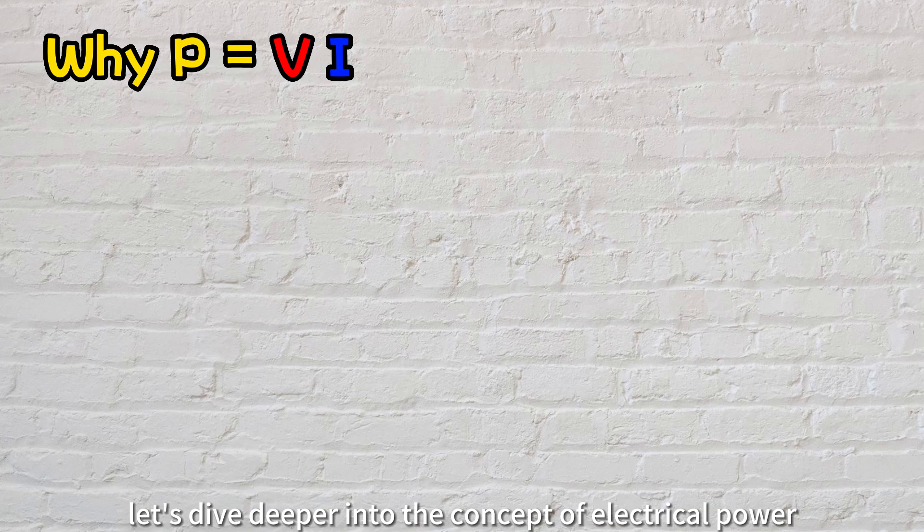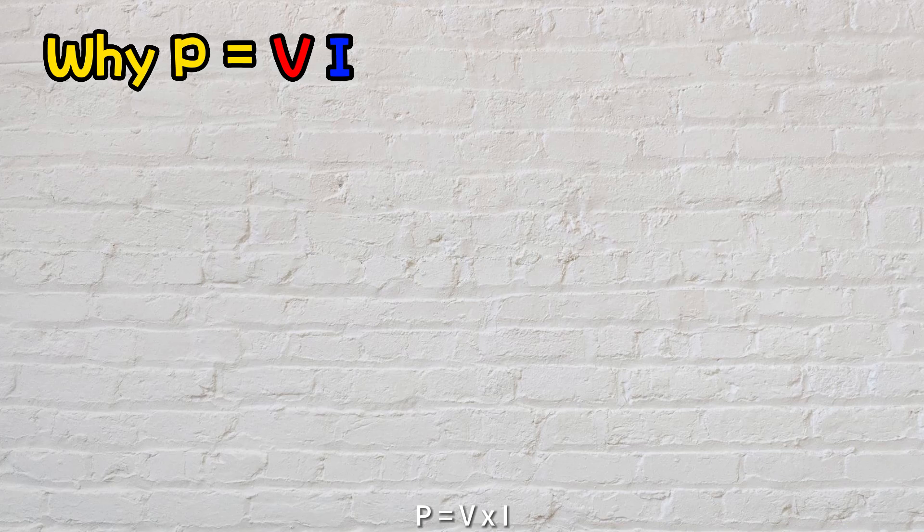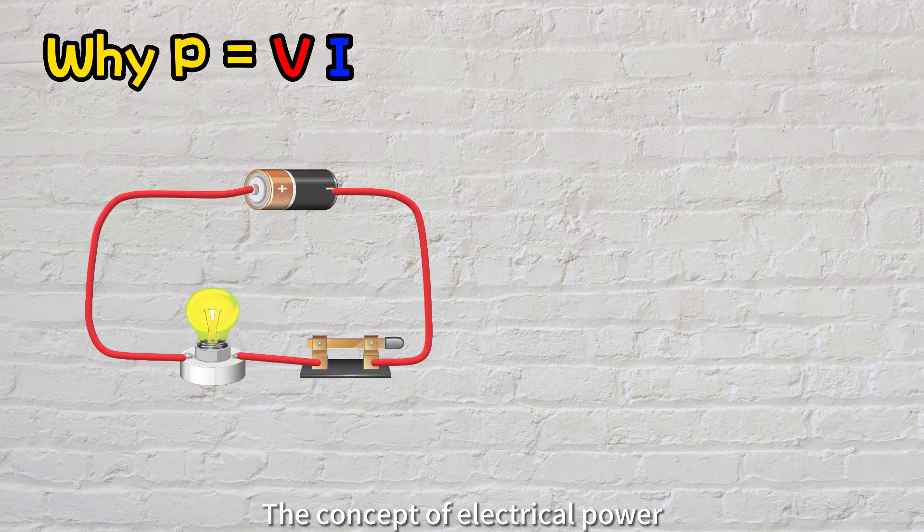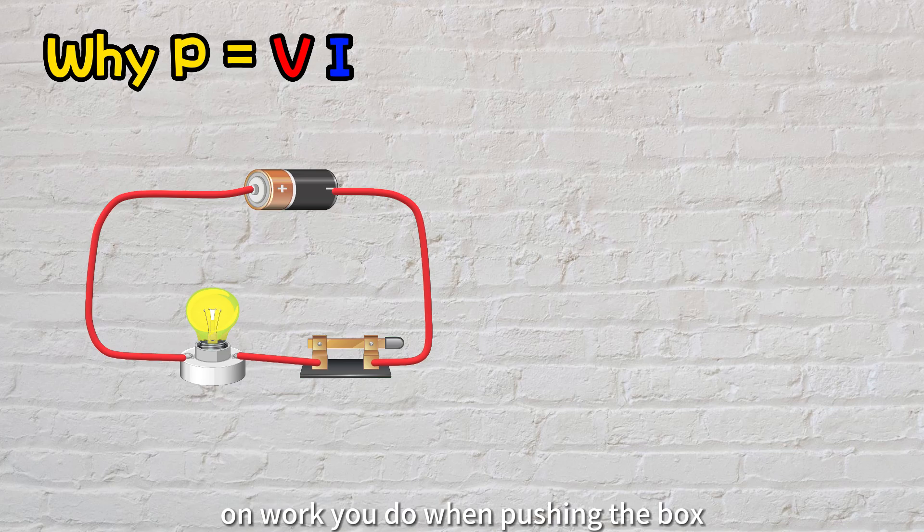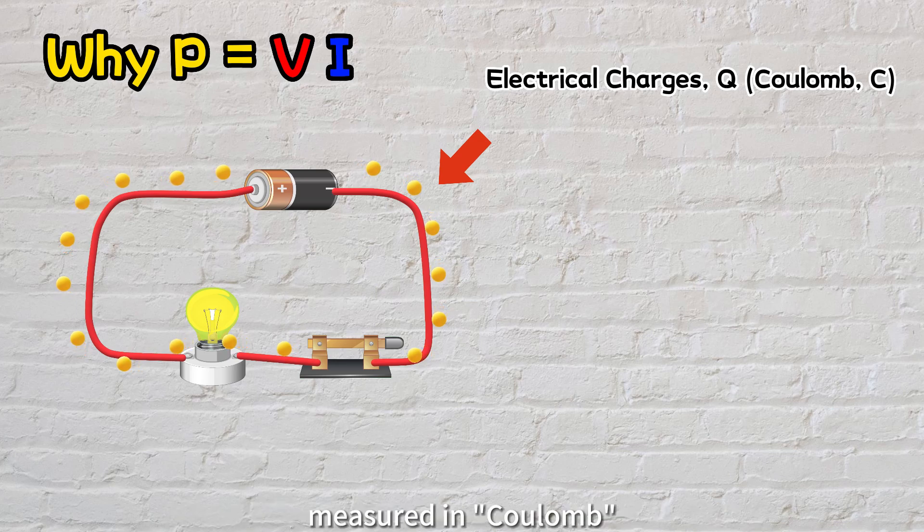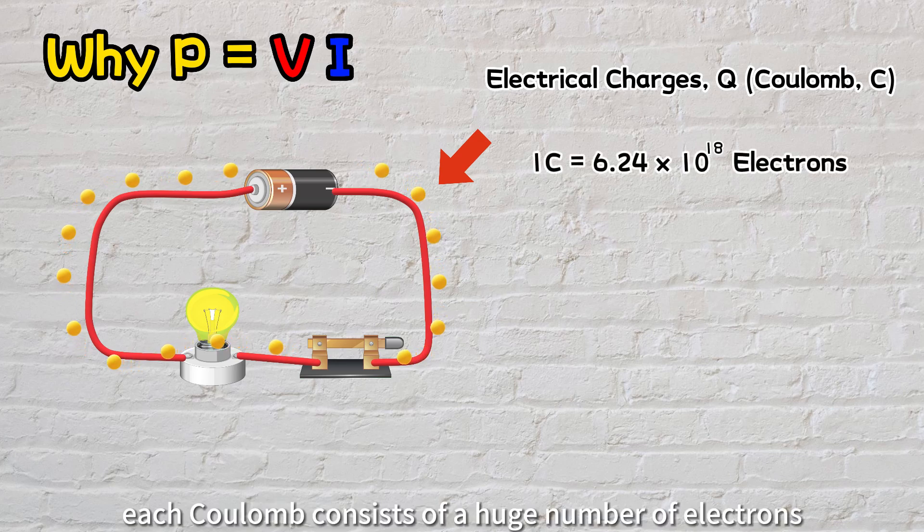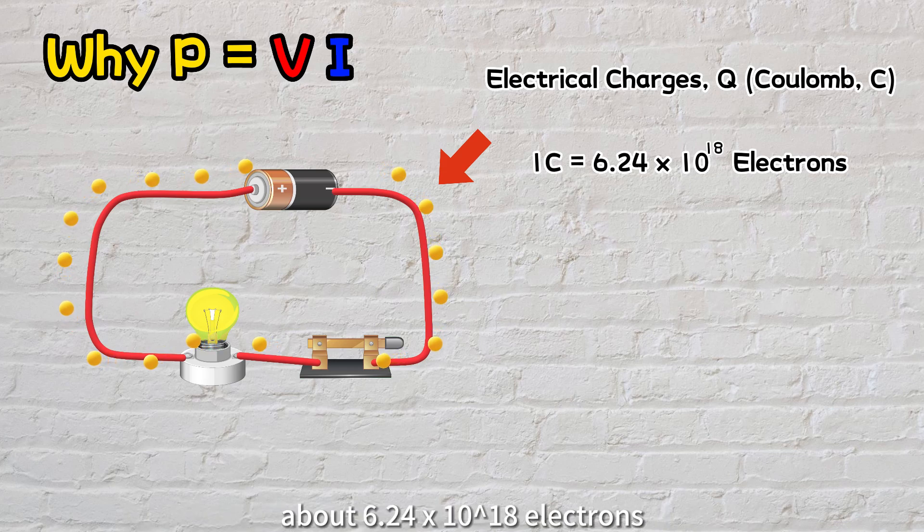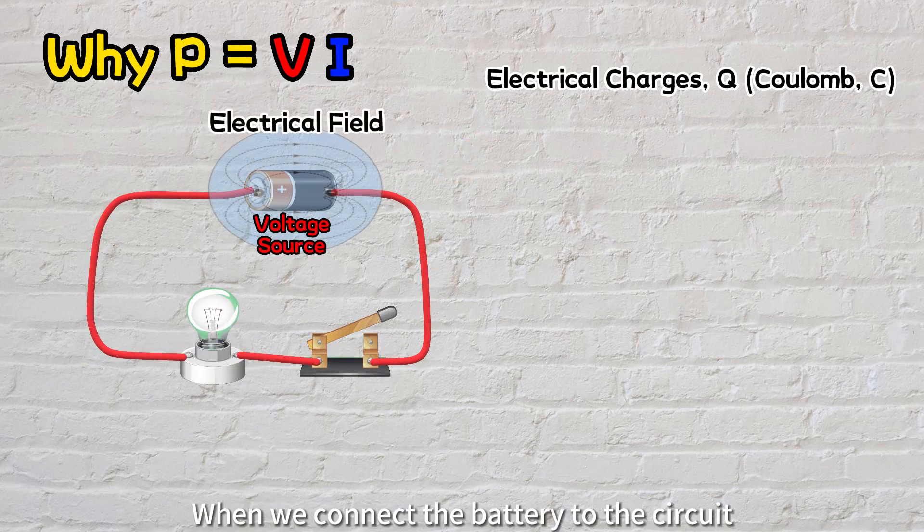Now let's dive deeper into the concept of electrical power and understand why power equals voltage times current. The concept of electrical power is similar to the earlier explanation on work you do when pushing the box, but instead of a physical box, we're dealing with a lot of tiny electrical charges measured in coulombs. Each coulomb consists of a huge number of electrons, about 6.24 times 10 to the power of 18 electrons.